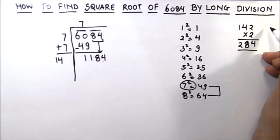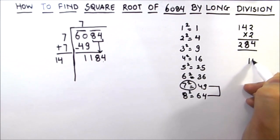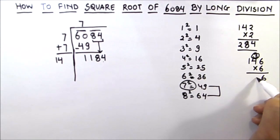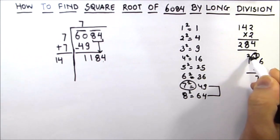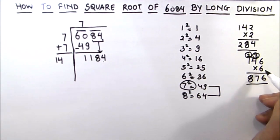Let's try 146 and multiply it by 6. So 6 times 6 is 36, 3 is carried over. 6 times 4 is 24, 24 plus 3 is 27. 2 is carried over. 6 times 1 is 6 plus 2 is 8. So this is also less than 1184. Let's try a digit which is bigger than this.